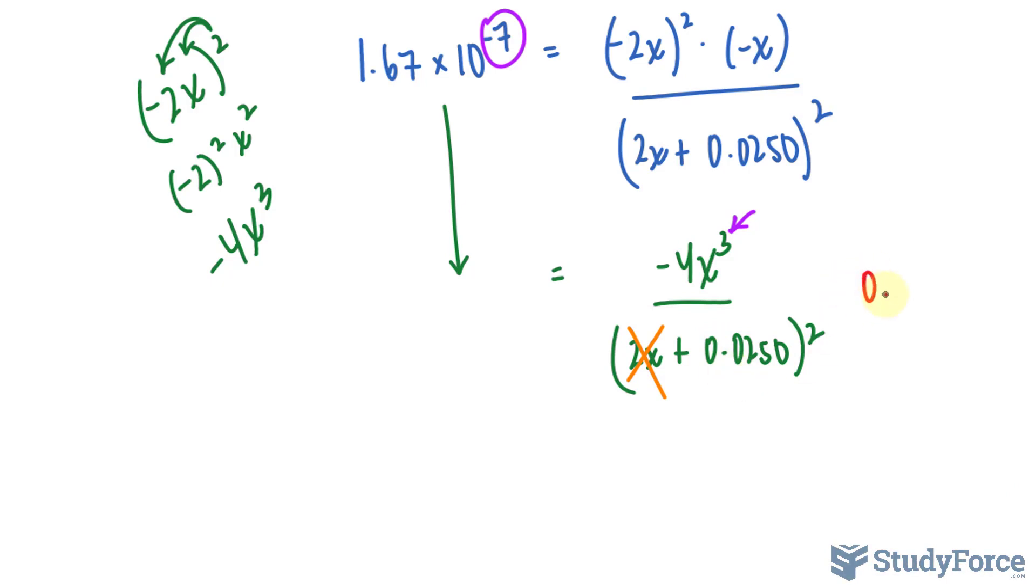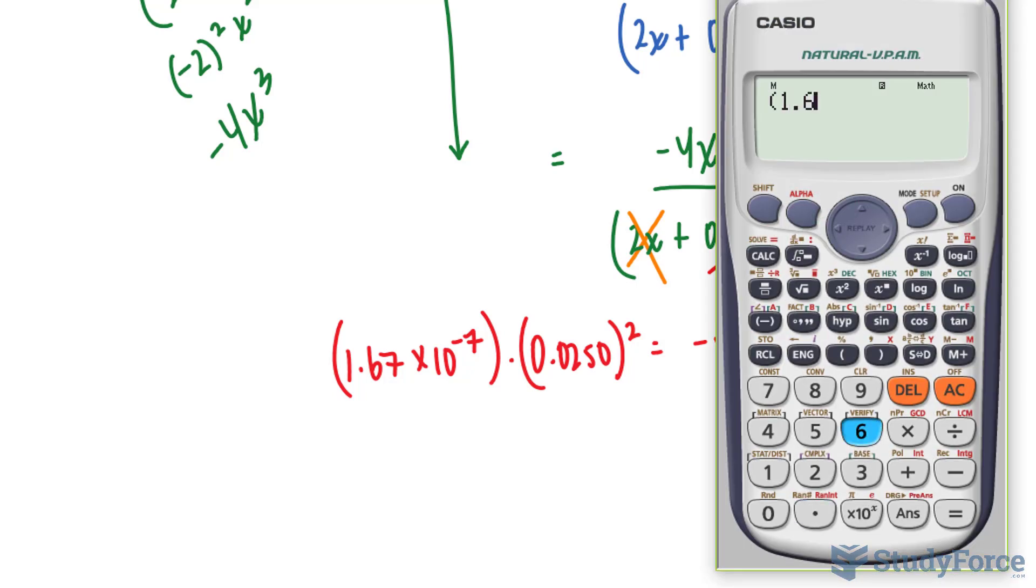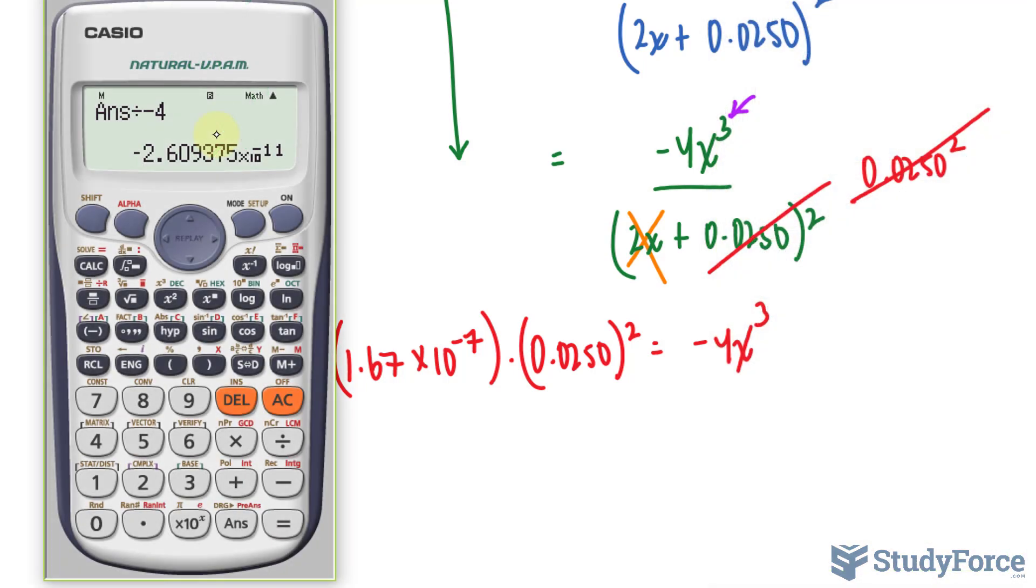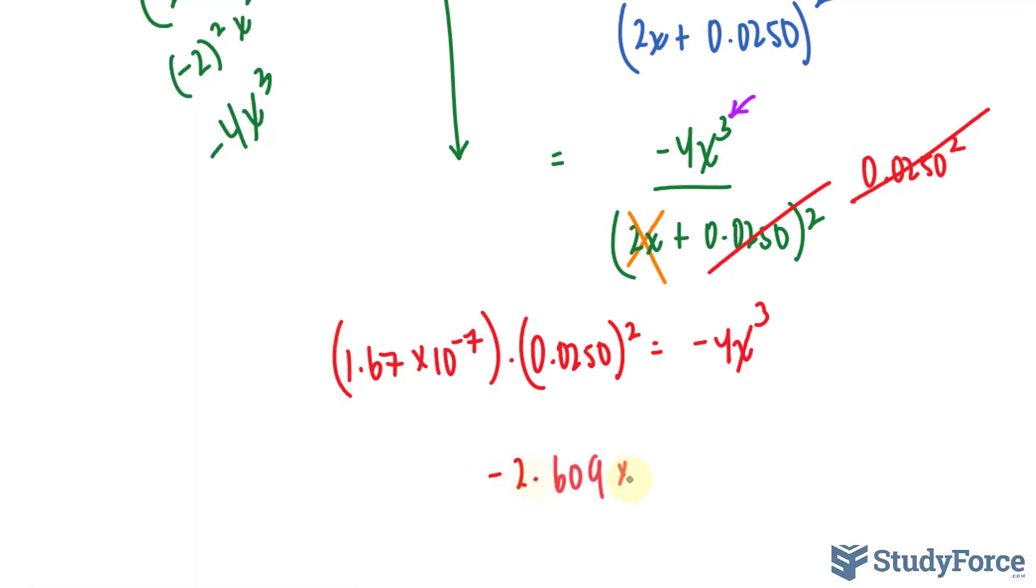I'll multiply both sides by 0.0250 raised to the power of 2, and that will cancel out this with the one at the bottom. And on the left side, you're left with 1.67 times 10 to the power of negative 7, multiply 2, 0.0250 raised to the power of 2 is equal to negative 4X cubed. We can now use your calculator. Bracket 1.67 times 10 raised to the power of negative 7 times 0.0250 raised to the power of 2, and then divide both sides by negative 4. We're left with negative 2.609 multiplied to 10 to the power of negative 11 is equal to X cubed.